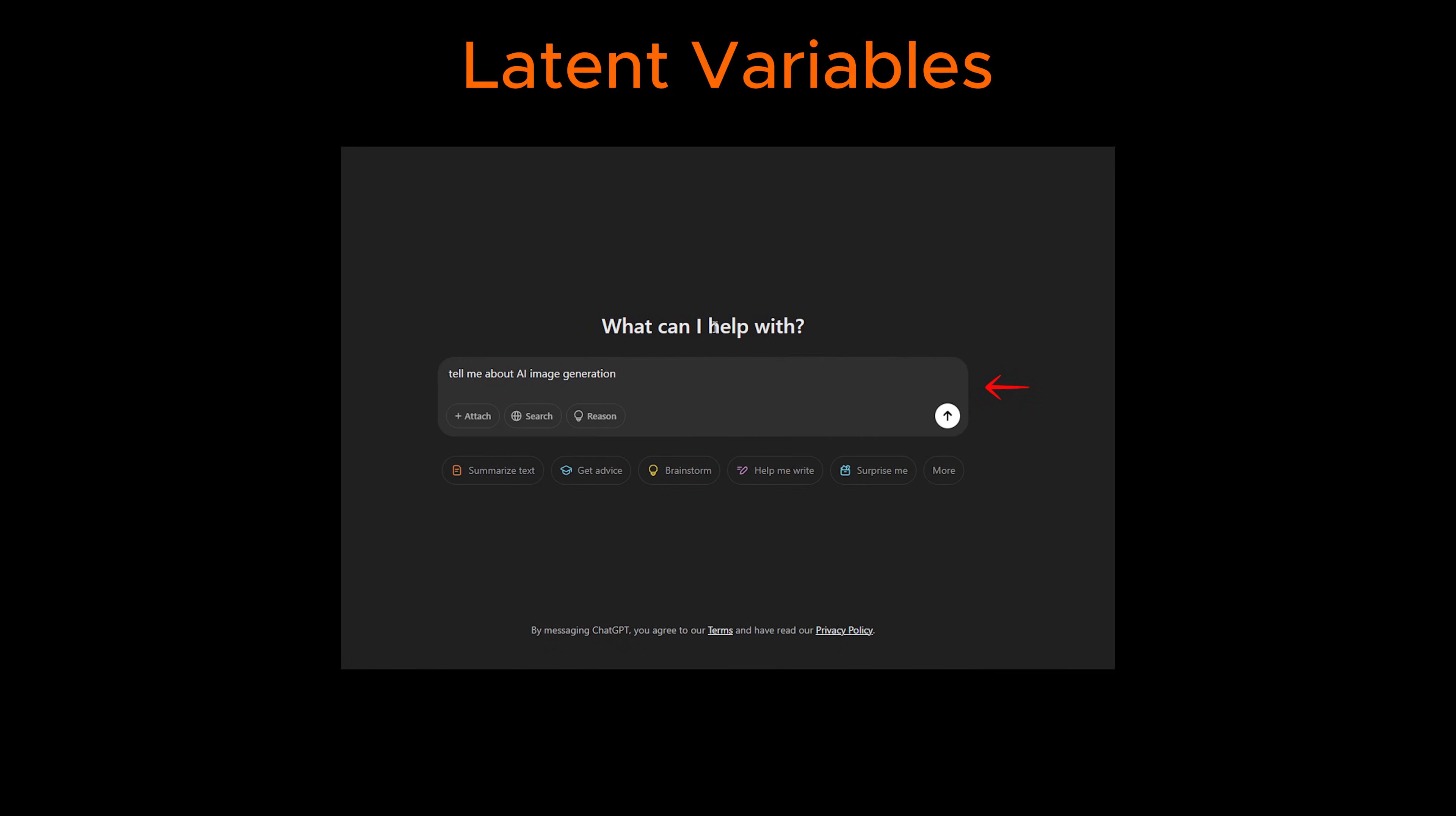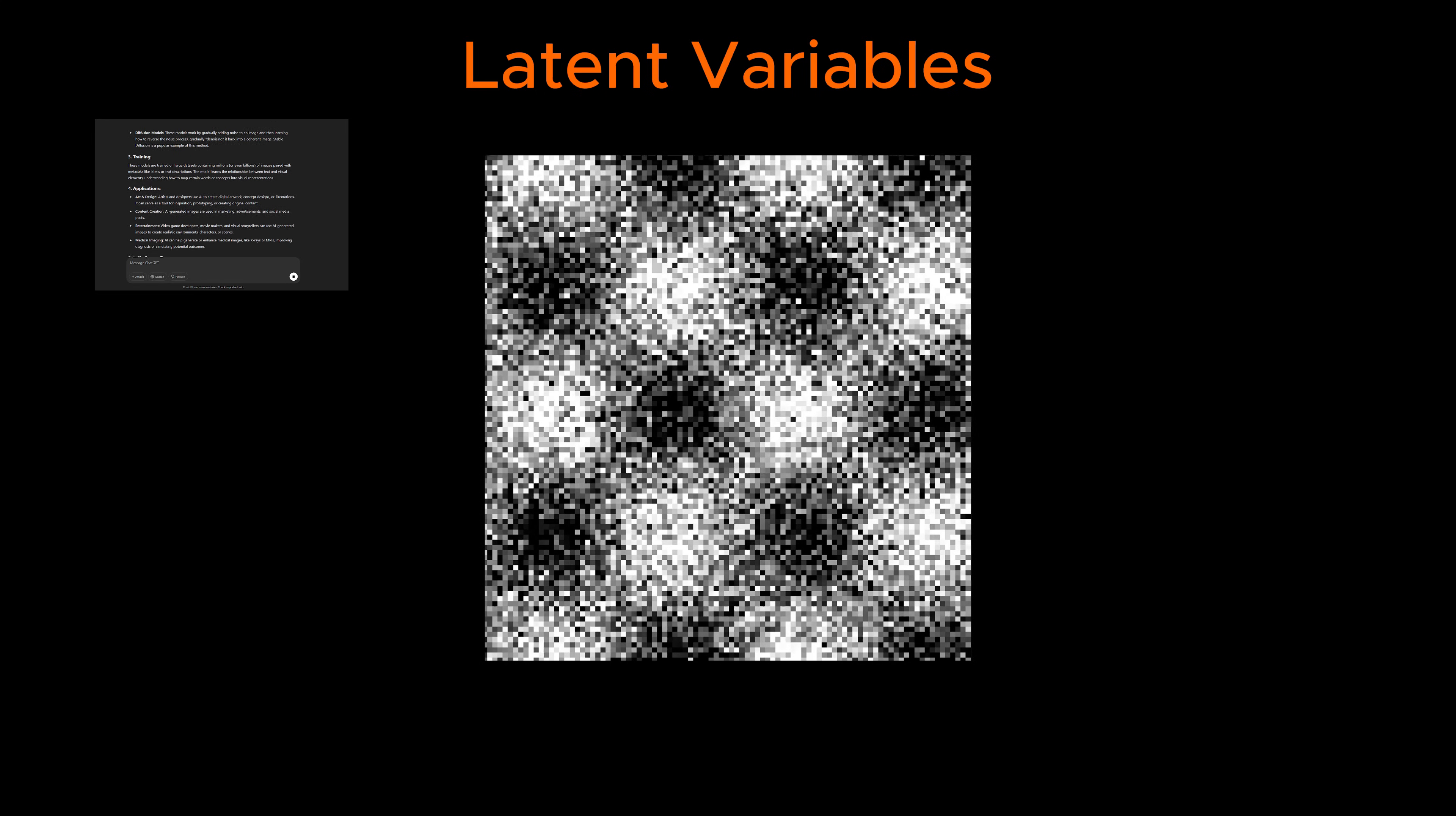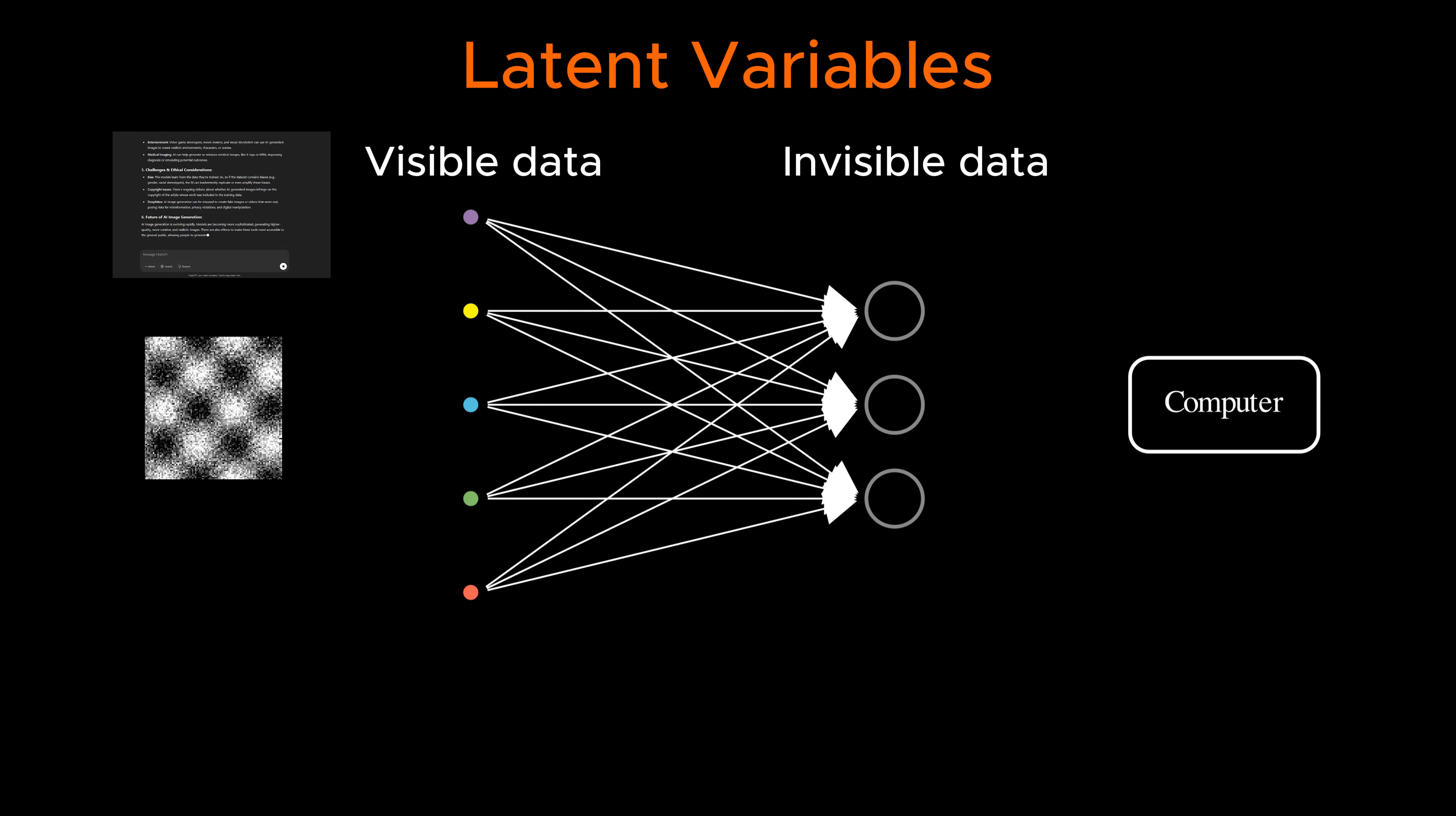Did you know the most important data in many generative AI models, such as ChatGPT, aren't even visible to us? The same sort of invisible data is used in some AI image generators. This invisible data is how these AI models understand complex patterns and generate realistic outputs.